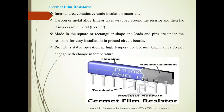Cermet film resistors have terminals surrounding the resistor element. The internal area contains ceramic insulating materials. A carbon or metal alloy film or layer is wrapped around the resistor and fixed in a ceramic-metal ceramic body. They are made in square or rectangular shapes with leads and pins underneath, making them easy to install in printed circuit boards.